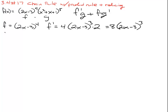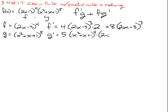Then we look at g, and g is (x squared plus x plus 1) to the fifth. So g prime is 5 times (x squared plus x plus 1) to the fourth, times the derivative of the inside which is 2x plus 1. We can clean this up and write it as (10x plus 5) times (x squared plus x plus 1) to the fourth.